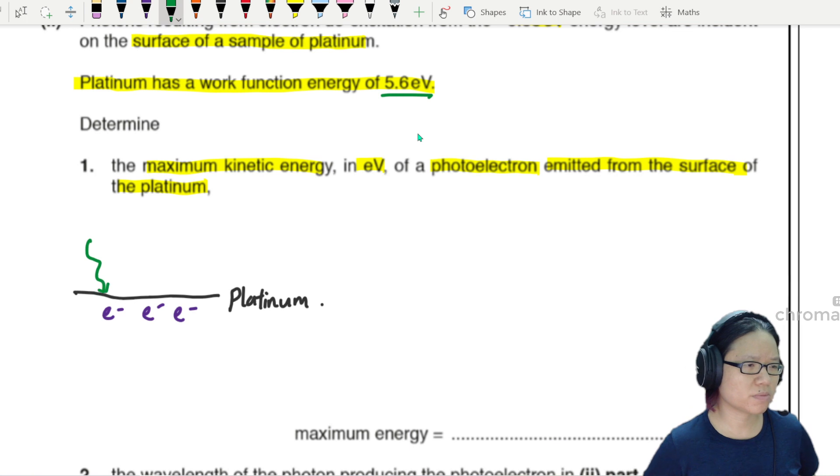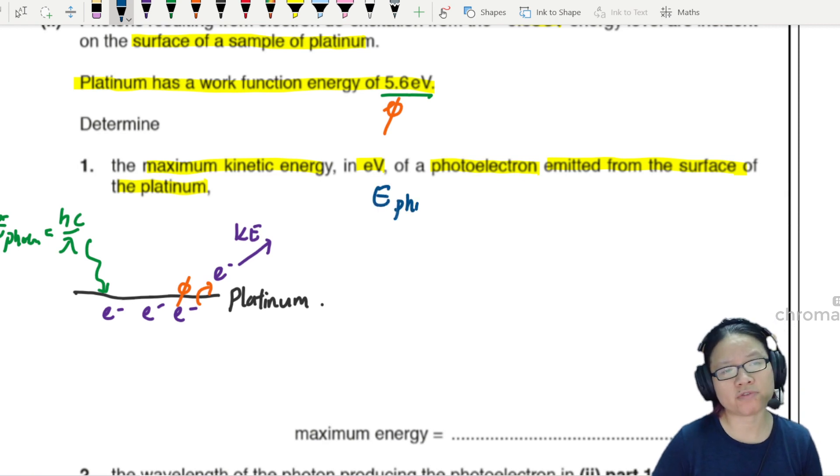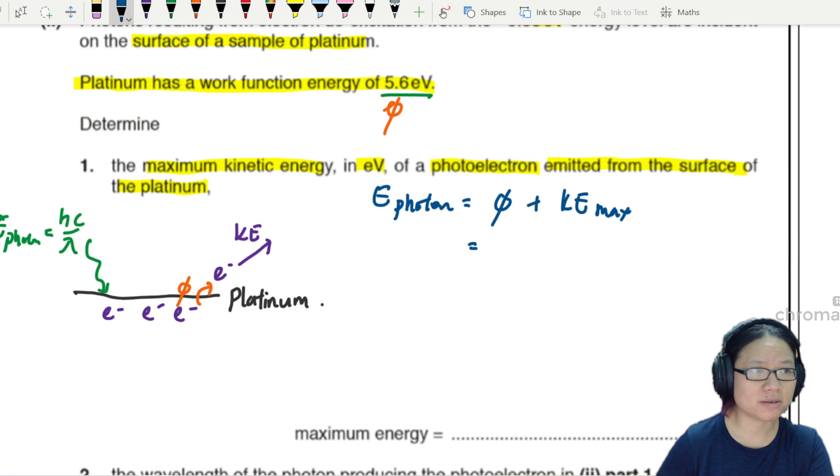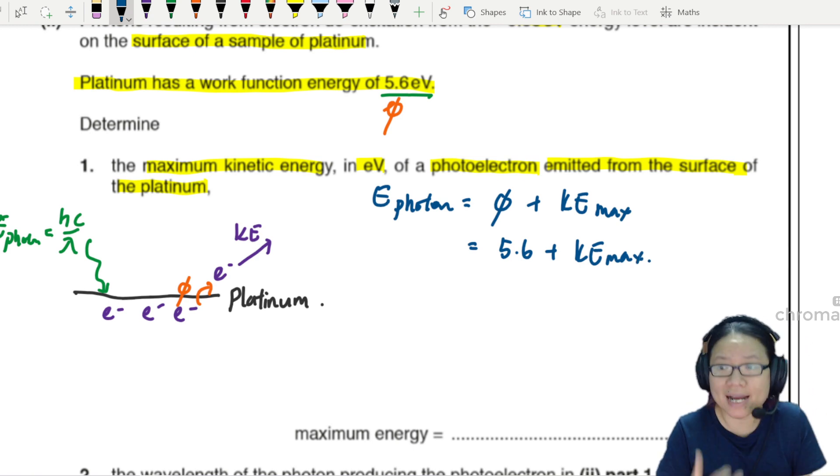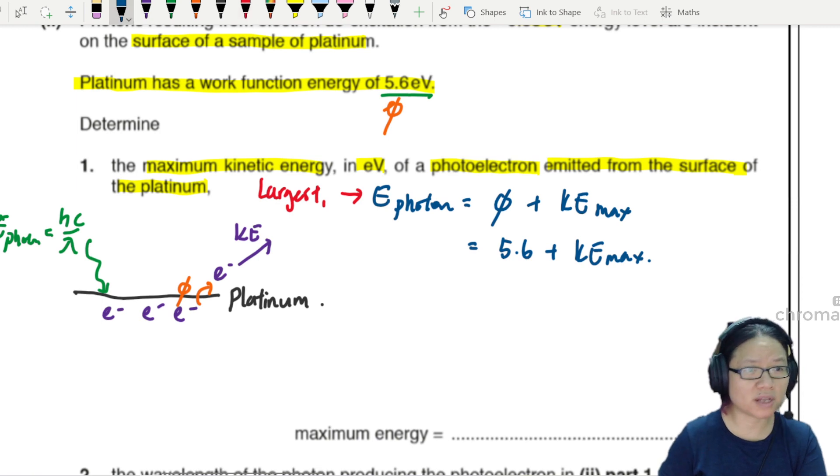I'm going to shoot all six wavelengths in this direction - this is hc over lambda, energy of photon. The electrons will then escape the metal surface - this is work function energy phi. Once the electron escapes it will have a certain amount of kinetic energy. By conservation of energy: energy of the photon equals work function energy plus kinetic energy maximum.